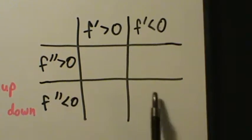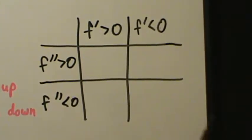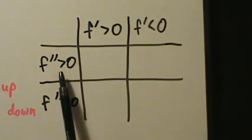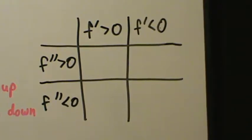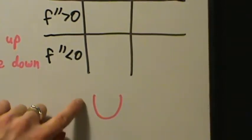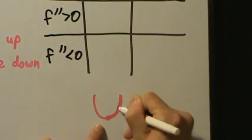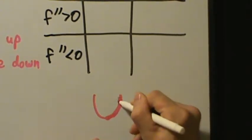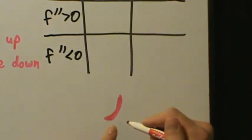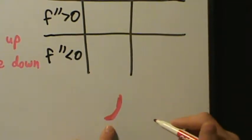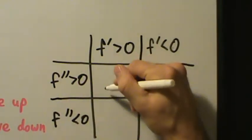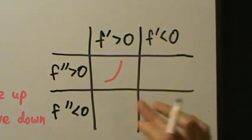We're going to draw little pieces of what the function f looks like given each combination. If f prime is greater than zero, the function is increasing. If f double prime is also greater than zero, the function is concave up — which looks like a bowl. Taking just the increasing piece of that bowl shape, we get a curve going upward with upward curvature. So if f prime and f double prime are both positive, the function looks something like that piece.